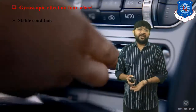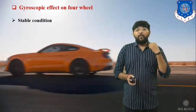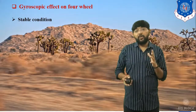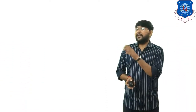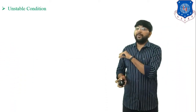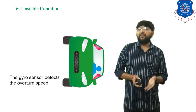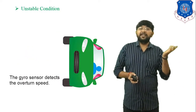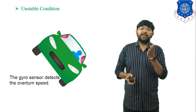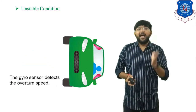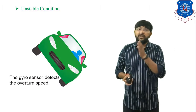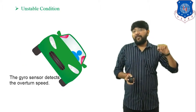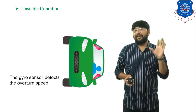Now, what is the unstable condition? While taking a turn at very high speed, due to centrifugal force and reactive gyroscopic couple, the inner wheel of the car tries to lift out. This is because of the reactive gyroscopic effect and the effect of centrifugal force. We have to discuss which type of effect occurs while taking a turn.